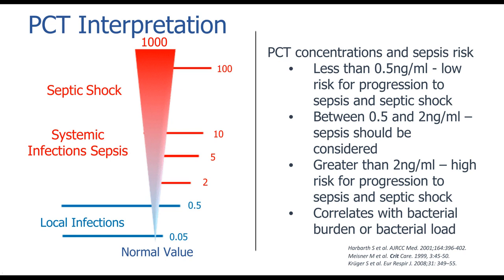A normal PCT value is 0.1 or less. From 0.1 to 0.5 is considered a localized infection with not a lot of systemic release. Most hospitals report an alert value of 2 and a critical value of 10. These numbers can go as high as 1,000 — we've had patients in DIC and necrotizing conditions in the 700s and 900s. There is no single magical number at which a patient is in sepsis or septic shock — that is a syndrome. The higher the number, the greater the cause for concern. Prognostically, a high number with failure to trend down is not good.